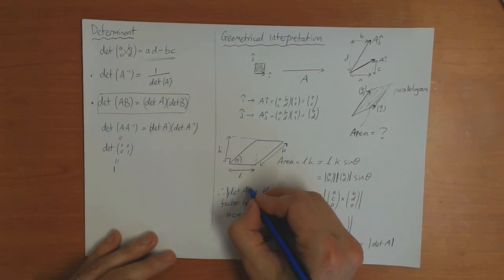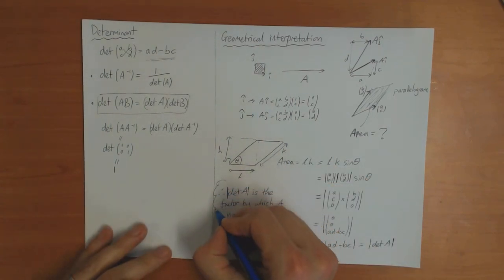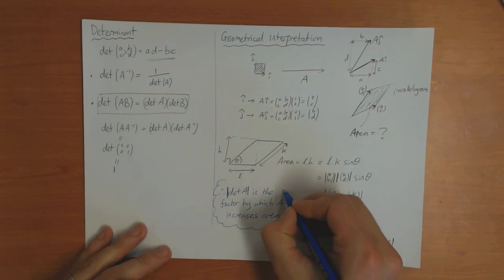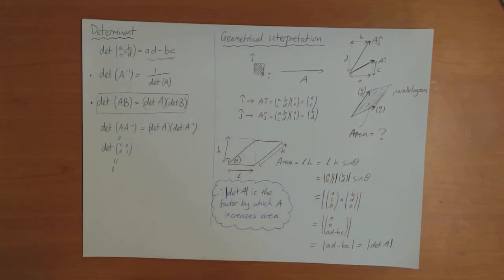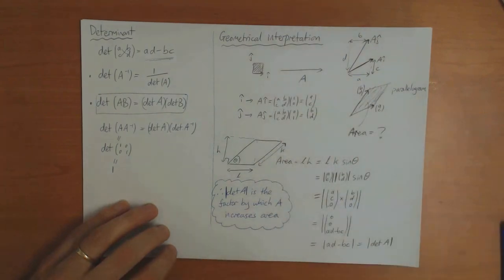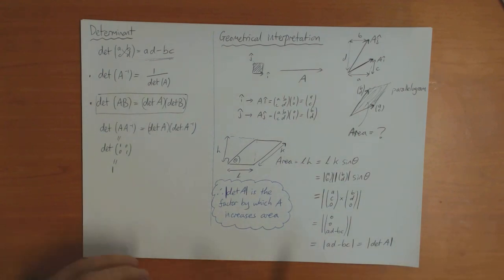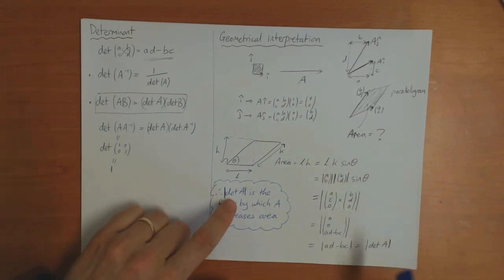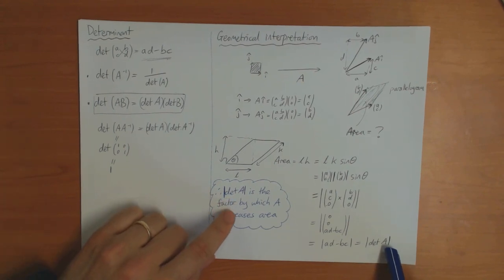At least the absolute value of the determinant of A. That's a very important conclusion, and we'll use it when we talk about generalizing the determinant to higher dimensions — the fact that the determinant tells you the scale factor of the transformation.